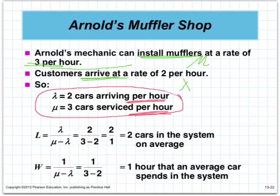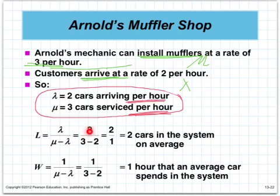Now we can calculate the cars in the system on average. We use the formula L, where L equals lambda over mu minus lambda. You plug in your variables: wherever there's lambda you put 2, wherever there's mu you put 3. So this gives you 2 over 3 minus 2, which is 2 over 1, which is two cars in the system.